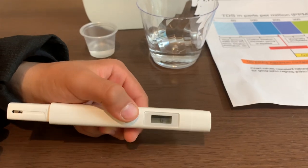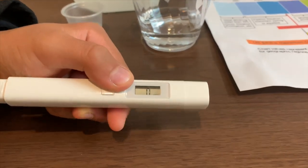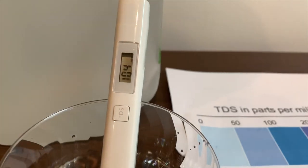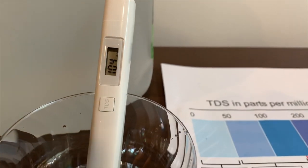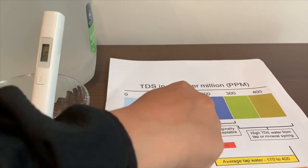Turn on the TDS tester, make sure it says zero, and put it in. One hundred and four. That is okay to drink.